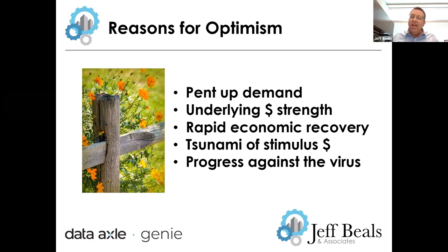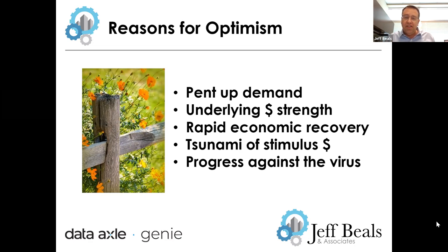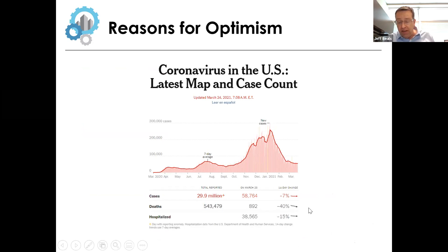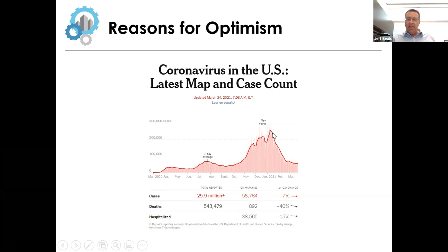The fifth bullet point is progress against this virus. We are making a lot of progress. This is from the New York Times this morning — Coronavirus in the U.S., latest map and case count. 14-day average: cases down 7%, deaths down 40%, hospitalizations down 15%. You can see how things have dropped from their high back in January after that surge we had in late fall and the beginning of winter.